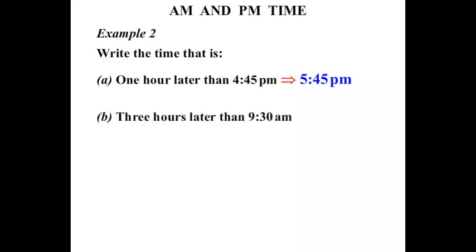What about three hours later than 9:30 AM? Well if we add three to 9:30, let's go up an hour at a time. So we start at 9:30, then we're getting 10:30, 11:30, 12:30. So certainly 12:30 is three hours later, but we've gone from AM to PM. We've gone past midday there.